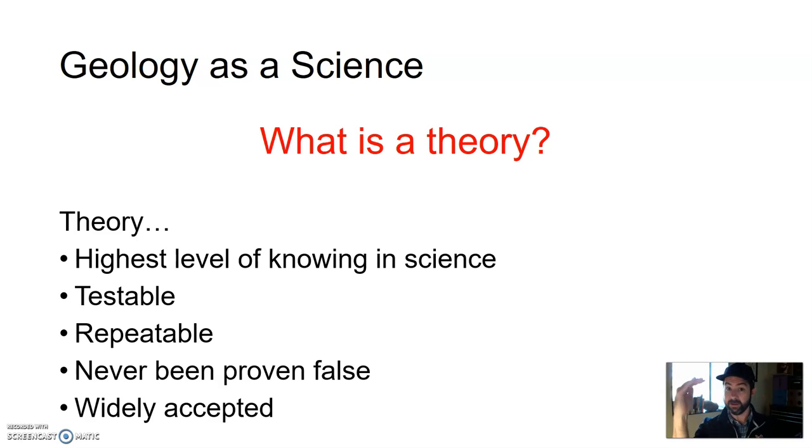It's a theory, meaning the theory of evolution is the highest level of science. It's testable. We have evidence. Those tests give us repeated results. Evolution is a thing. The theory of evolution has never been proven false.